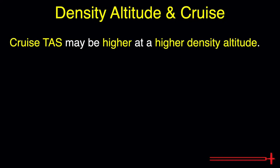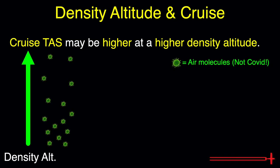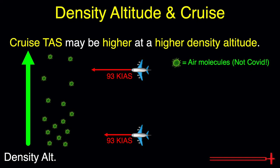Moving on to cruise: cruise true airspeed may end up slightly higher at a higher density altitude. Because the air molecules at a higher density altitude are more spread out, an aircraft at a higher density altitude will have to move faster to impact the same number of air molecules with the pitot ram-hole. This means that, to display the same indicated airspeed, an aircraft at a higher density altitude must travel at a higher true airspeed. So inadvertently, our cruise speed will most likely end up a little higher unless we are already at maximum power.